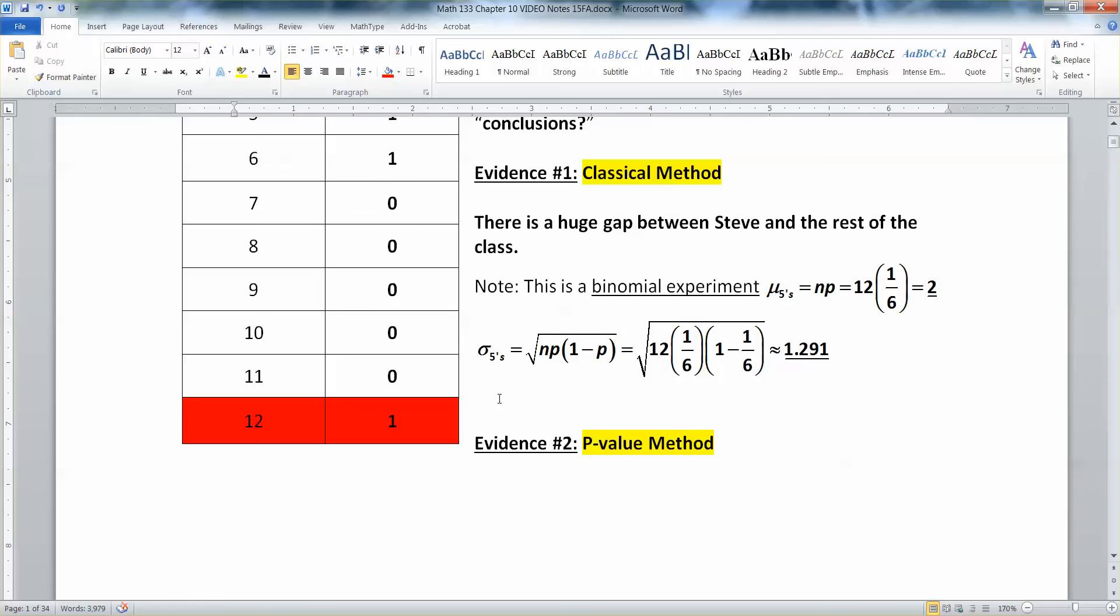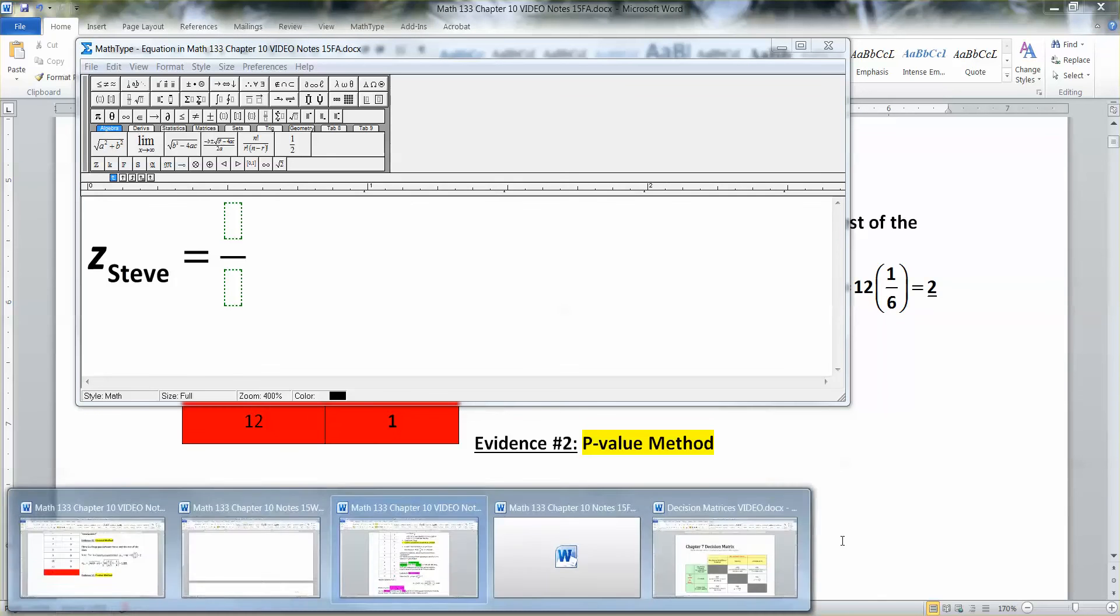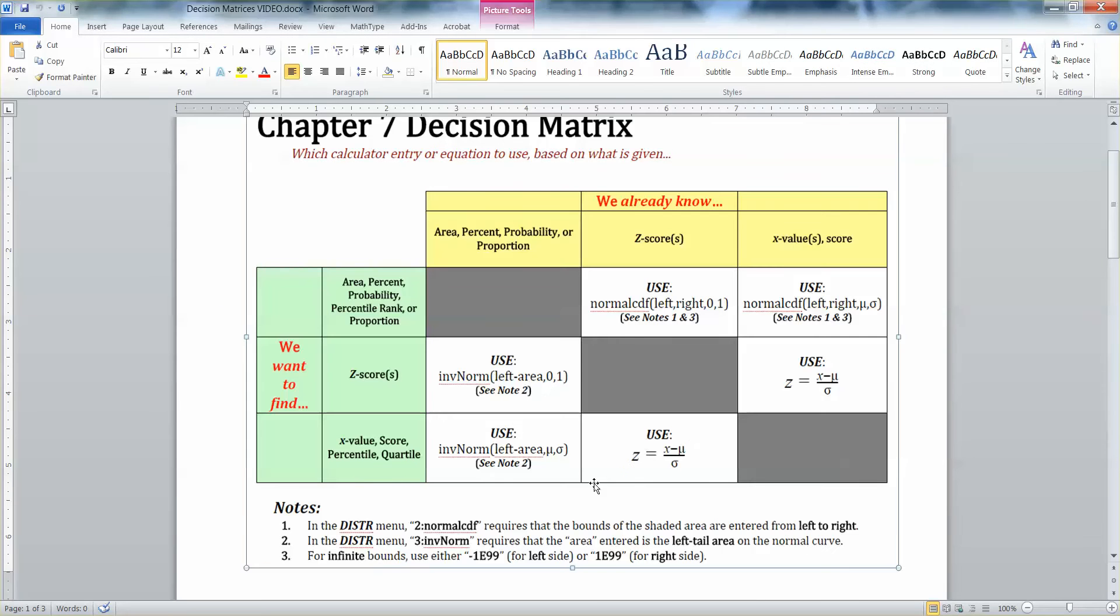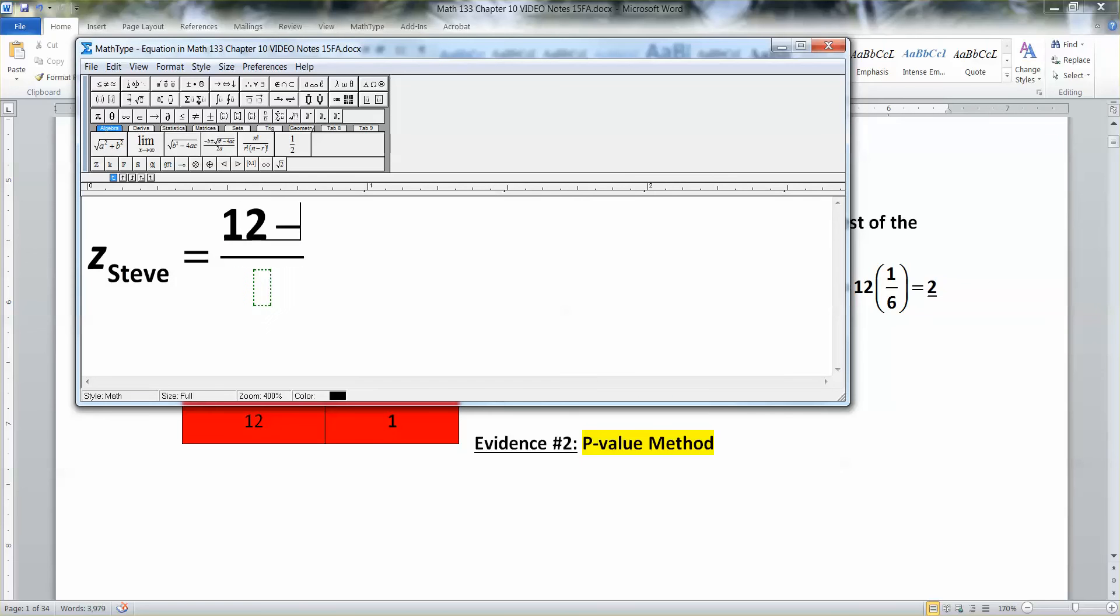So I want the square root of 12 times 1 sixth times 1 minus 1 sixth. See, 1.291. Beautiful. Okay. So why did this help me? Well, I can find Steve's Z-score, in fact. Steve's Z-score. The Z-score for Steve. I should capitalize his name, I suppose. Steve is. Now, remember, we learned Z-scores way back in chapter 3. But I also have them on my decision matrix from chapter 7.